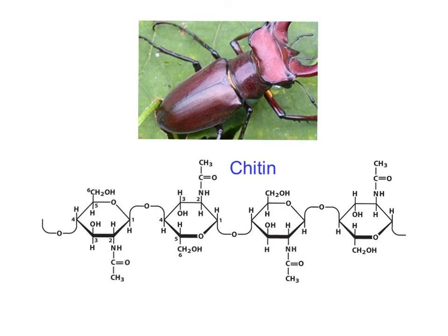Similar to cellulose, chitin has beta-1,4 glycosidic bonds, and the ring is also rotated 180 degrees, providing more opportunities for hydrogen bonds and making this structure very strong.